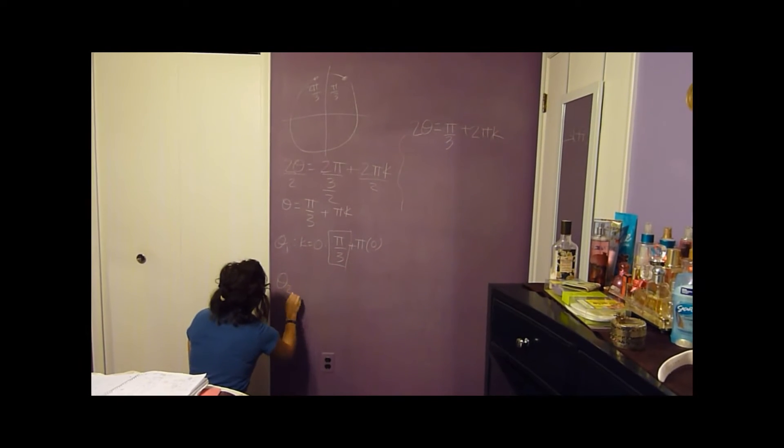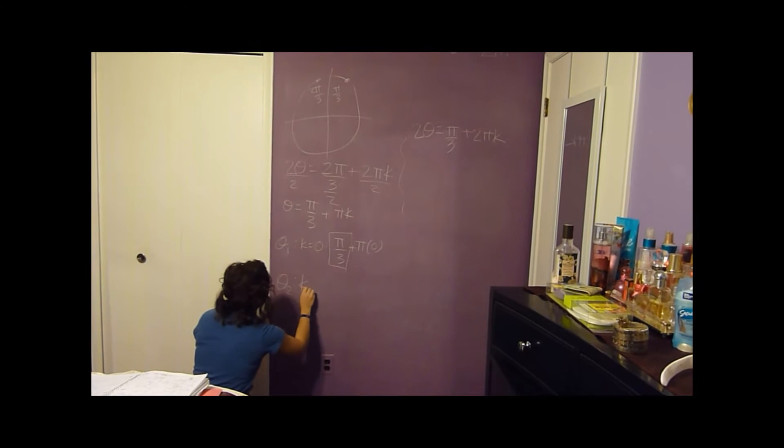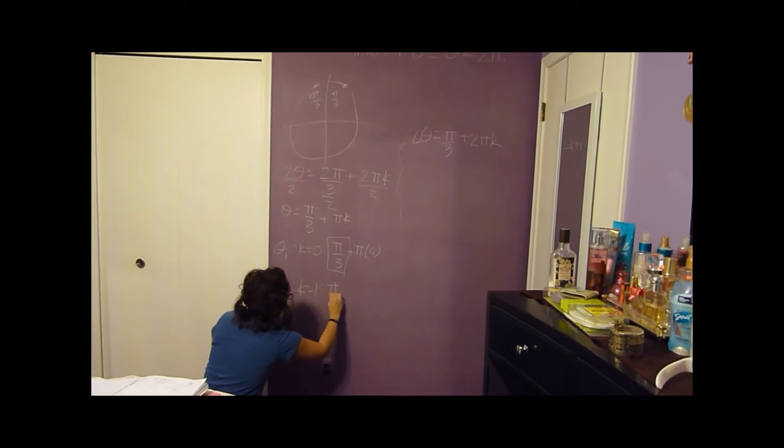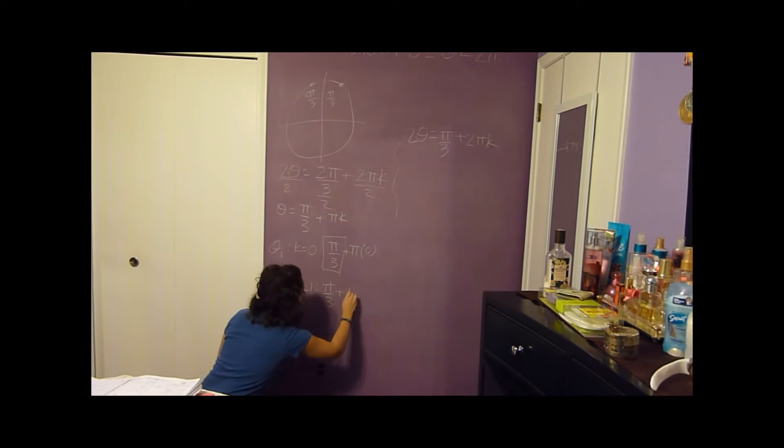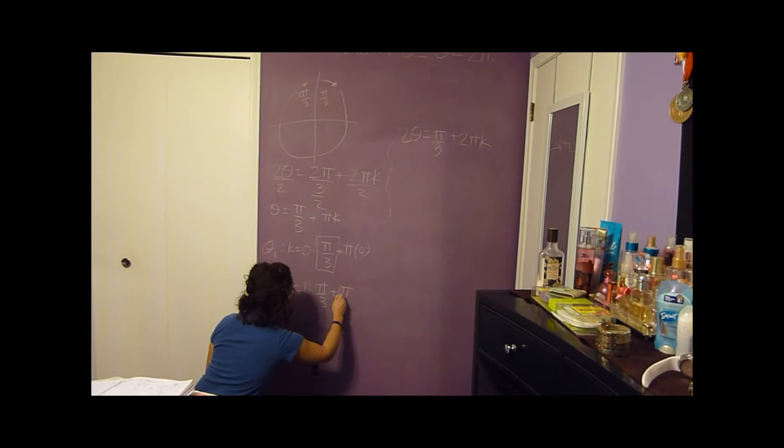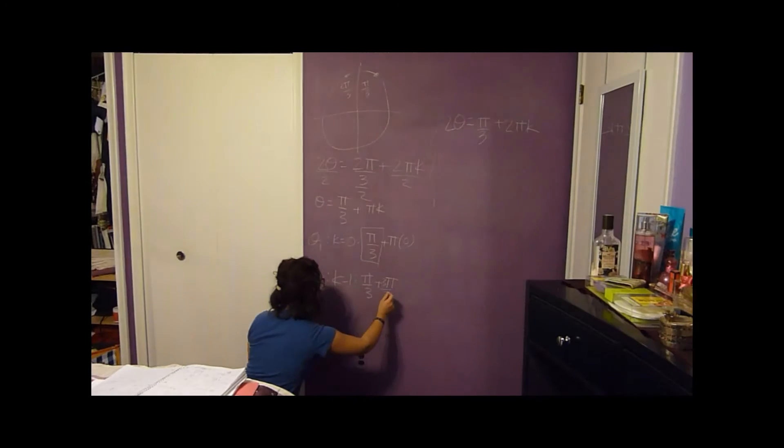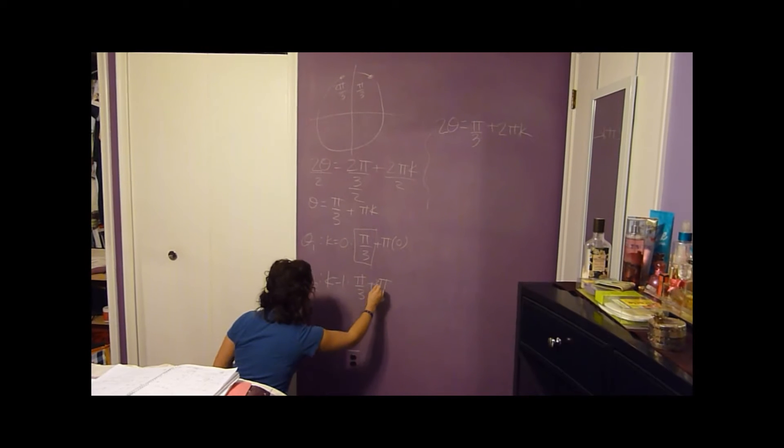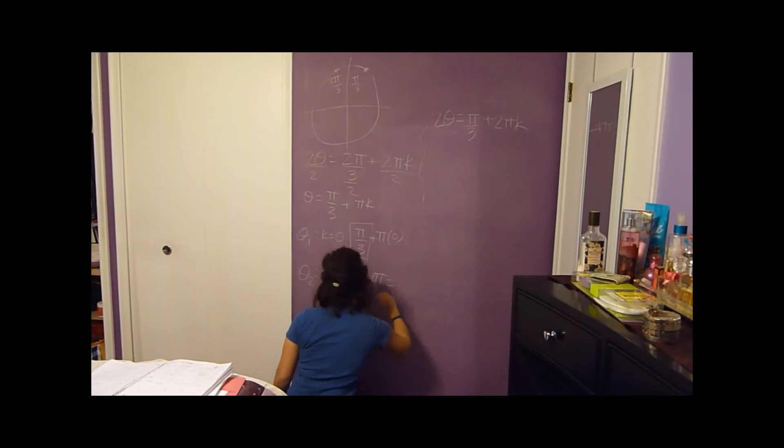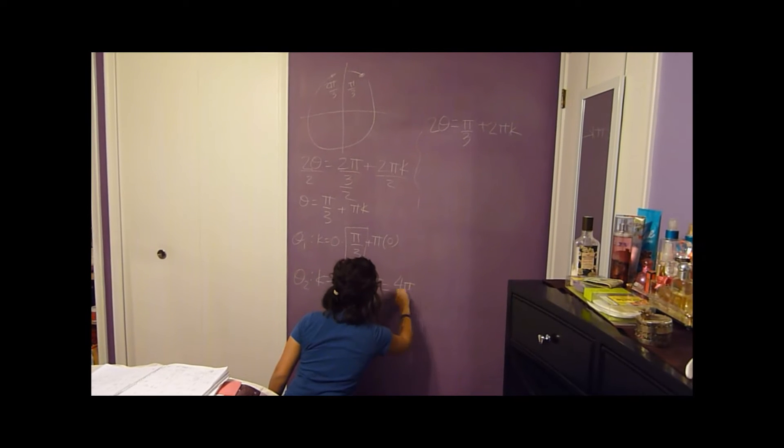So theta 2, k equals 1, pi over 3 plus pi, which would be 3 pi over 3. So that would be 3 pi over 3 plus pi over 3, which would get you 4 pi over 3.